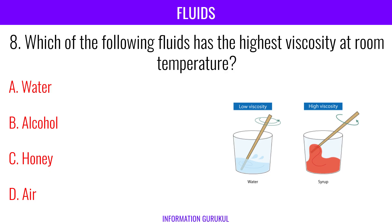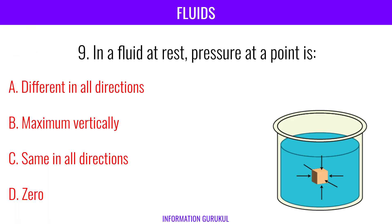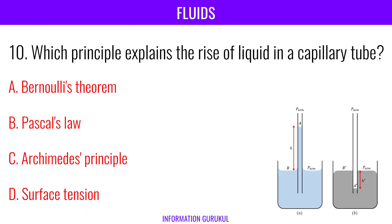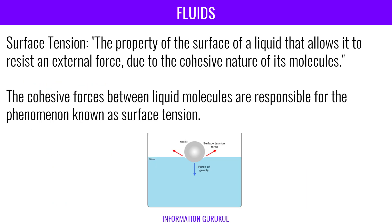Which of the following fluids has the highest viscosity at room temperature? Honey. In a fluid at rest, pressure at a point is the same in all directions. Which principle explains the rise of liquid in a capillary tube? Surface tension.